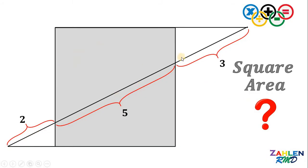We have a segment that passed through the square and cut into three pieces: three units, five units, and two units. And the question is, what is the area of the square shaded in gray?